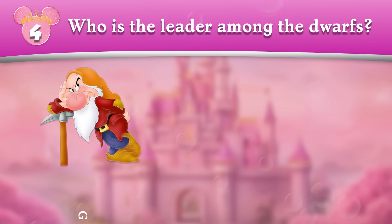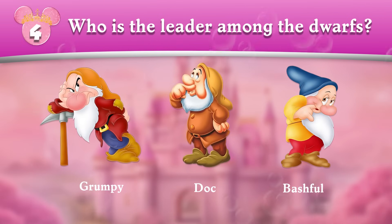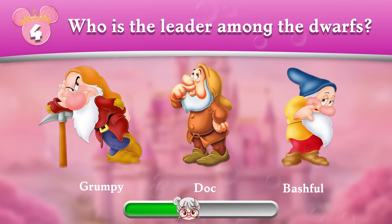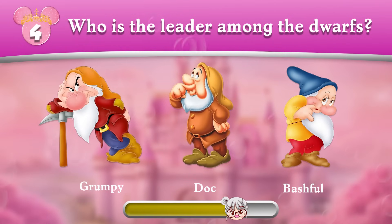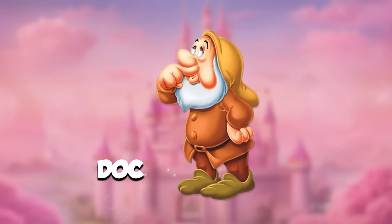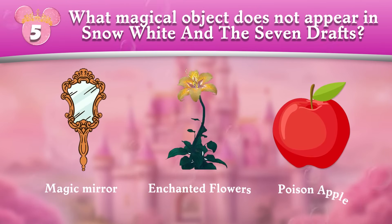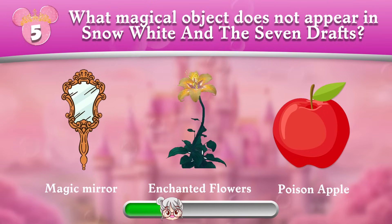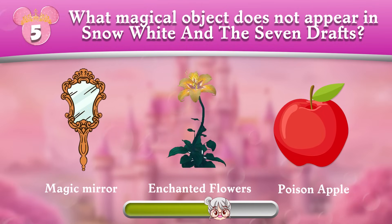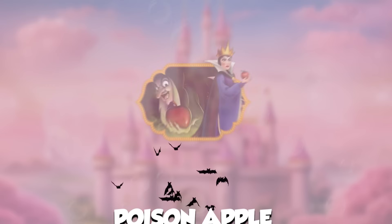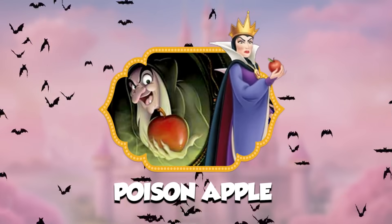Round 4: Who is the leader among the dwarves? Round 5: What magical object does not appear in Snow White and the Seven Dwarves? The evil queen uses an apple to poison Snow White!